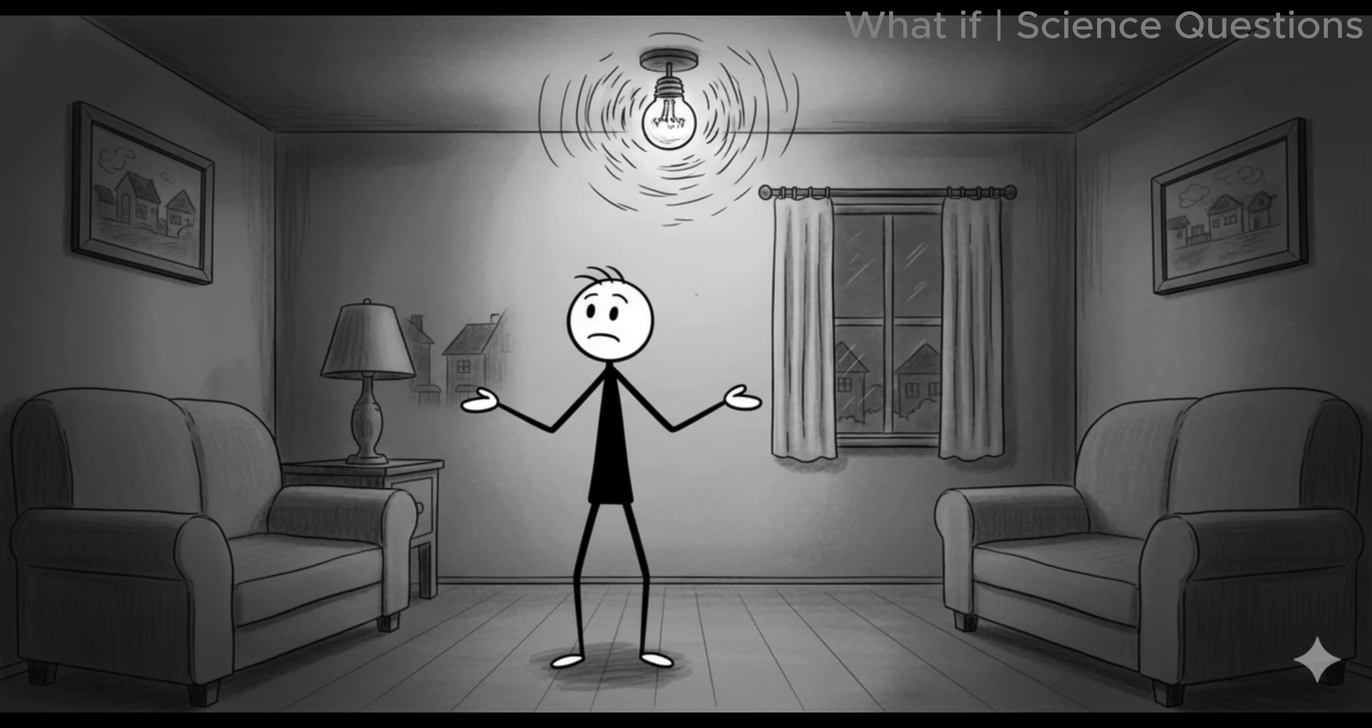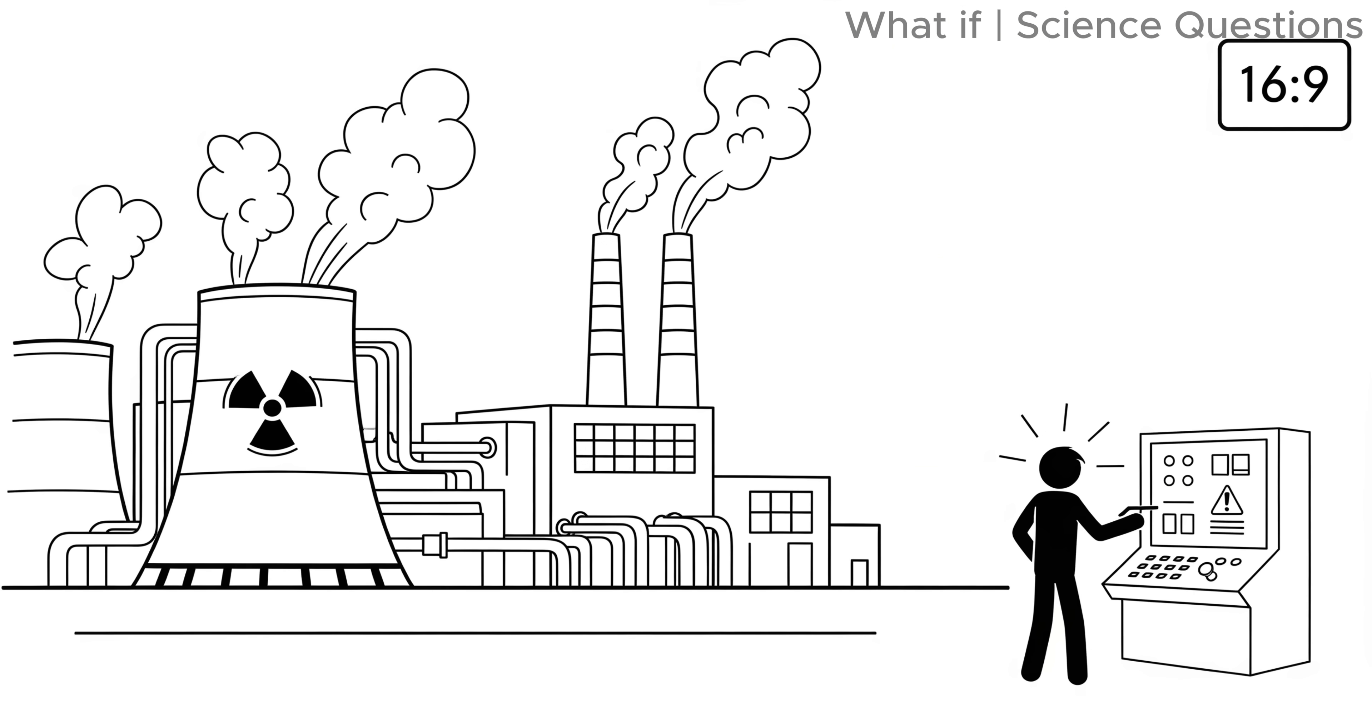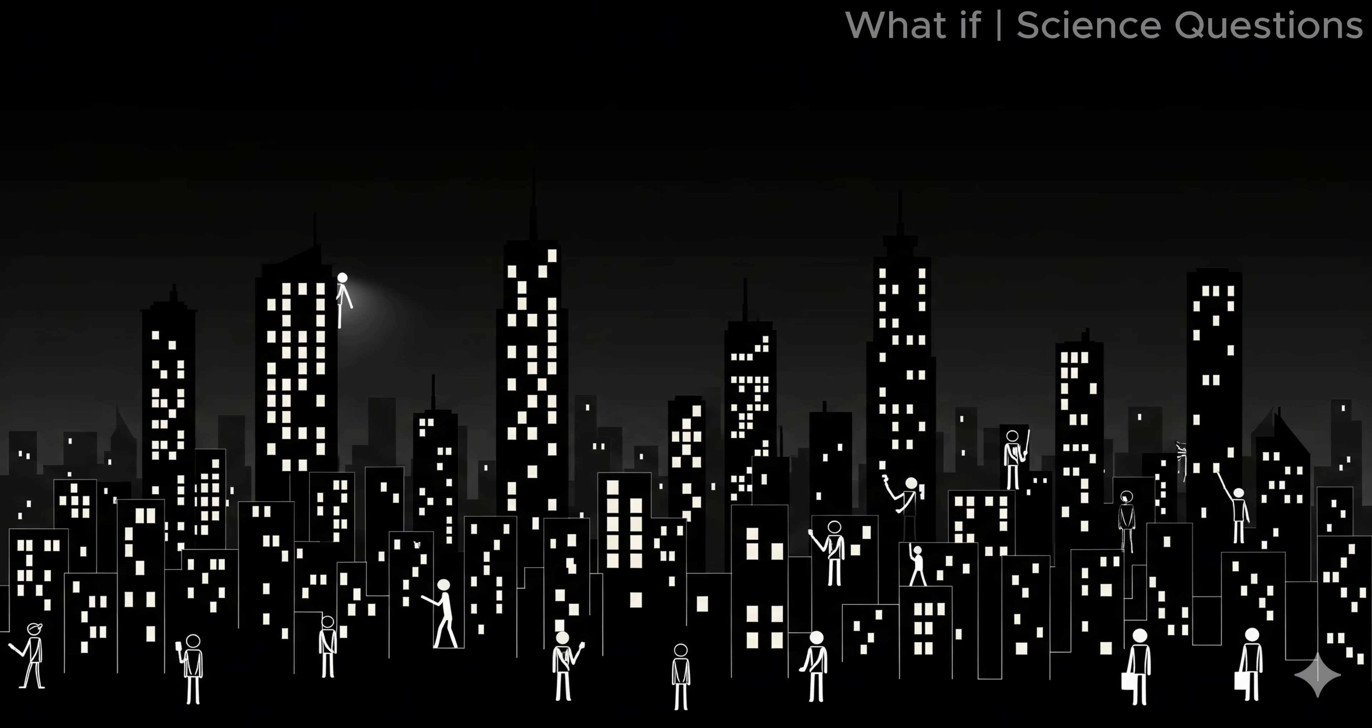In the first few hours, lights would begin to flicker. Without people to operate power stations, many grids would shut down quickly. Nuclear plants have automatic systems, but without maintenance, safety measures would eventually fail. Within days, most of our cities would be shrouded in darkness.